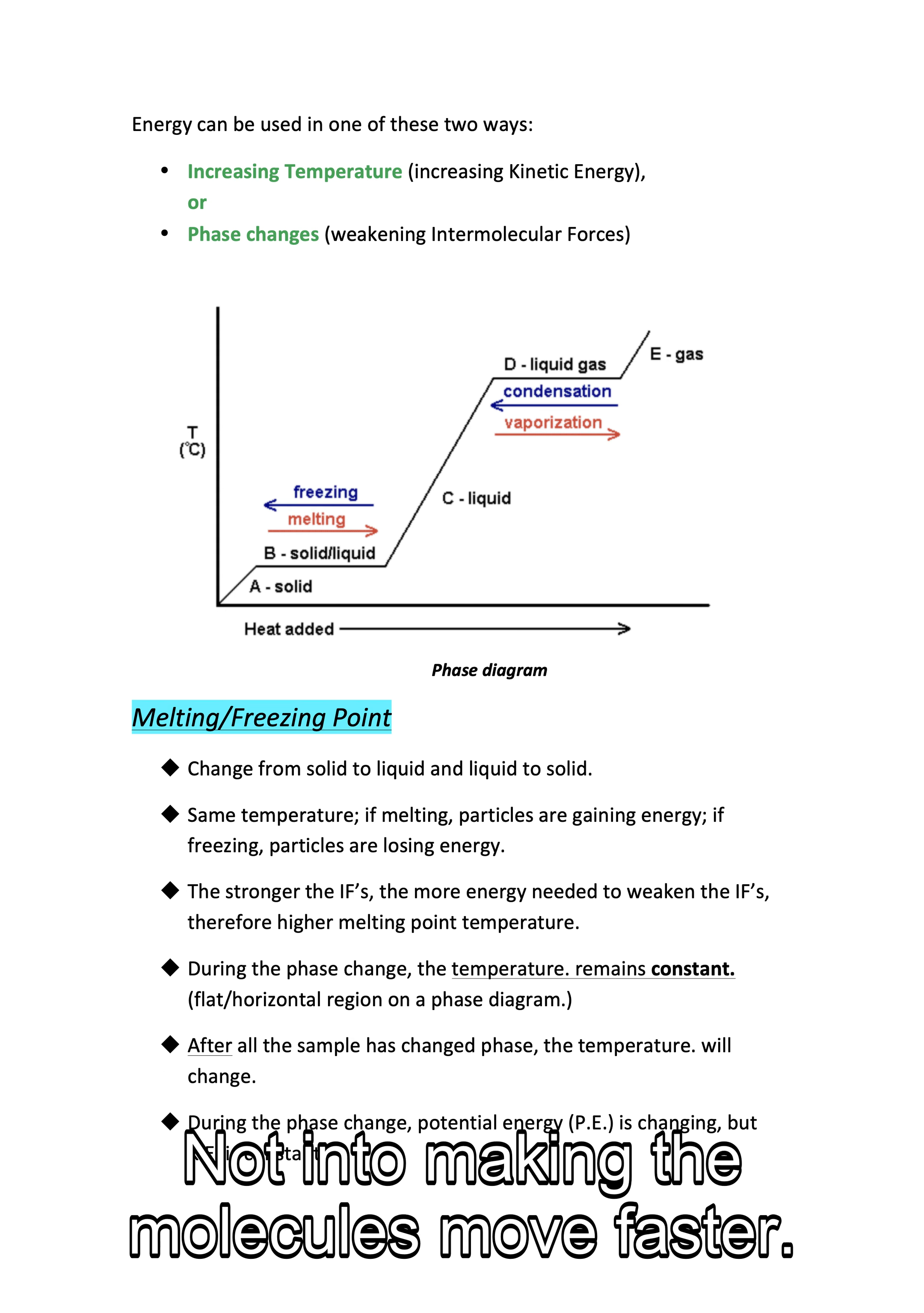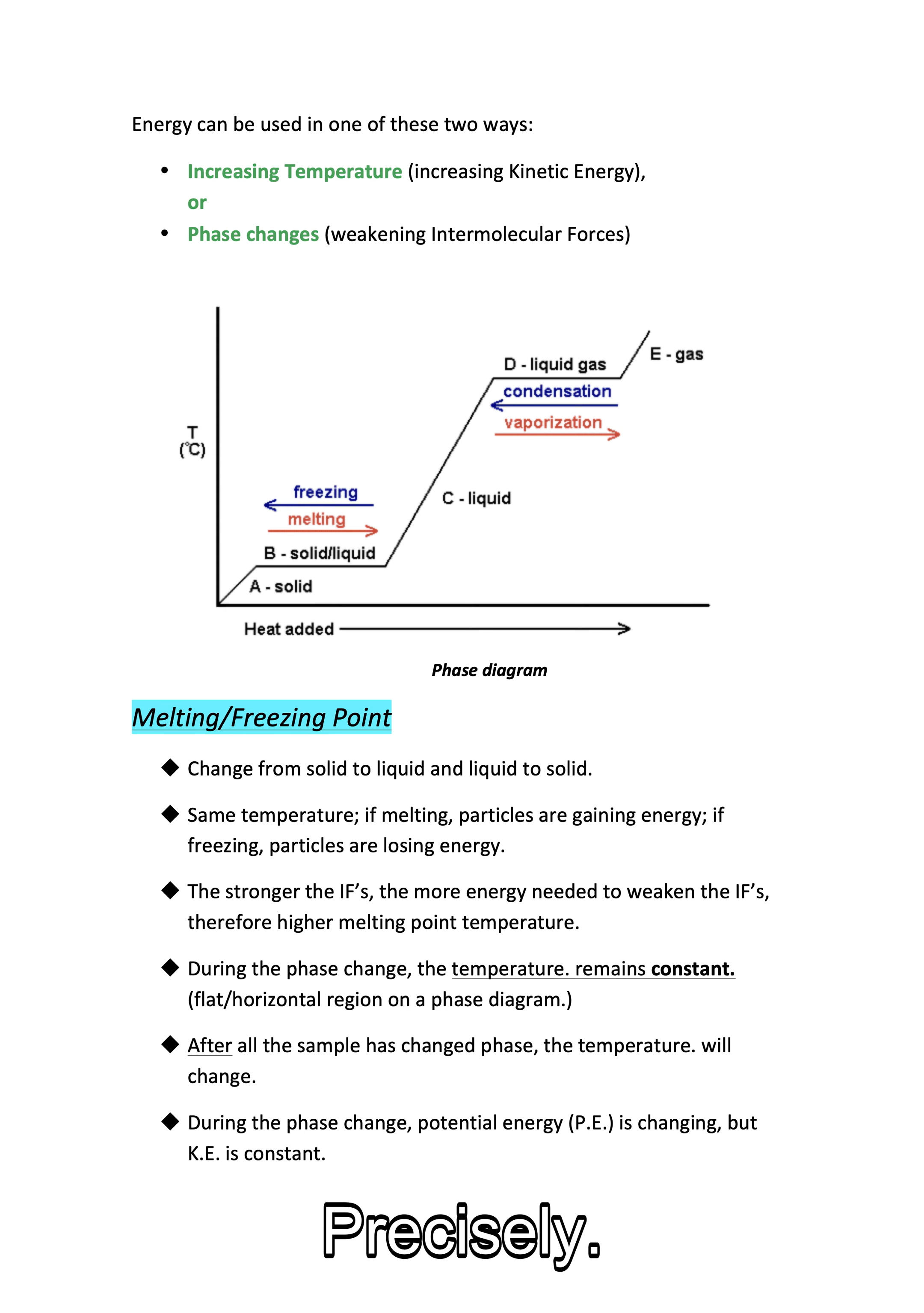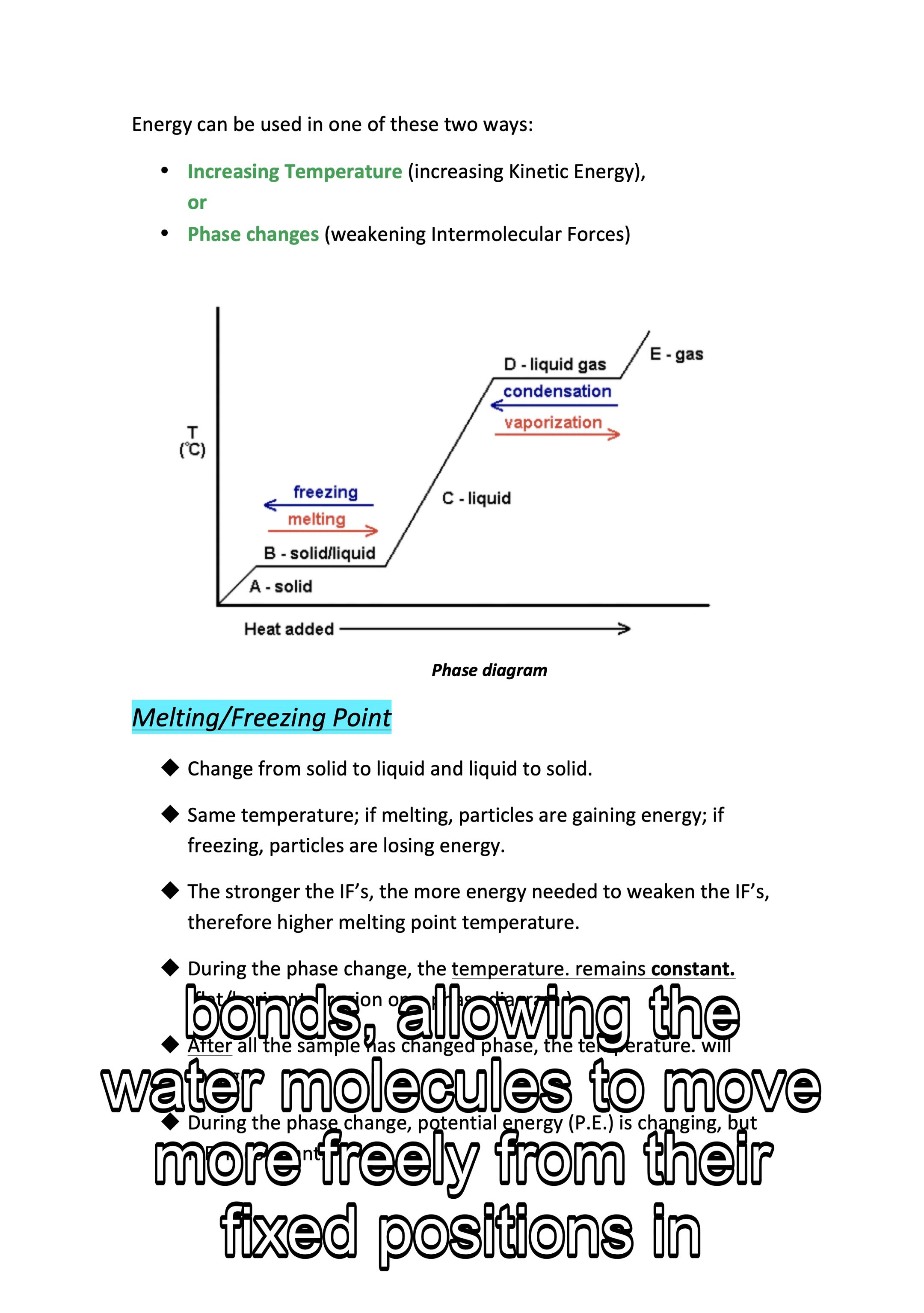But here's the key: during a phase change, all that added energy goes into loosening those intermolecular forces, not into making the molecules move faster. So it's like using energy to loosen the grip of those molecular magnets, not to make them spin faster. It's a change in relationship status rather than just getting more hyped on the dance floor. And that's why the temperature of the ice stays constant at zero degrees Celsius while it's melting.